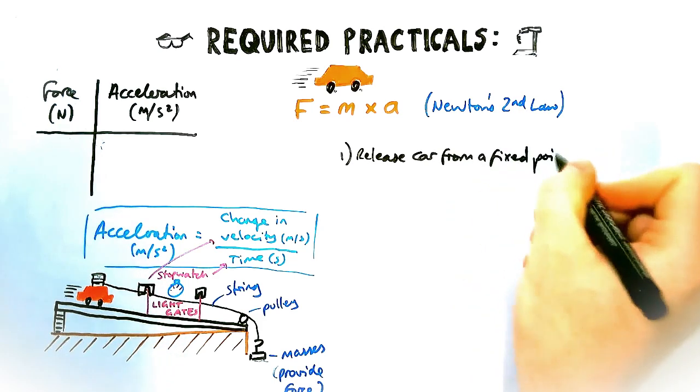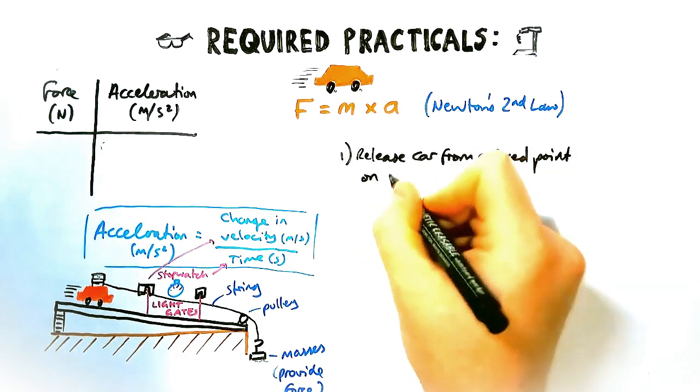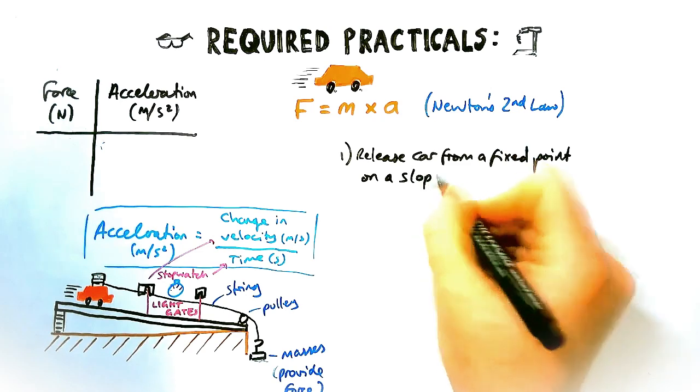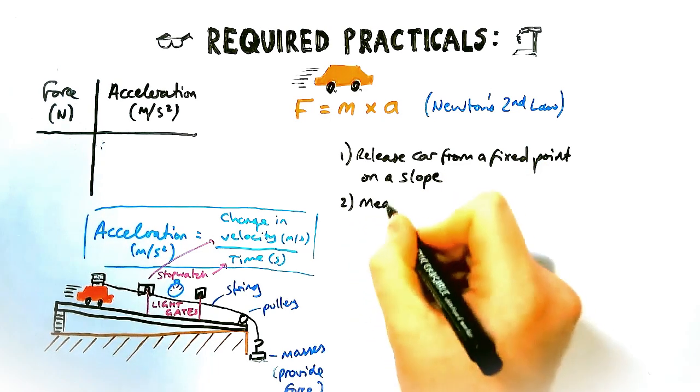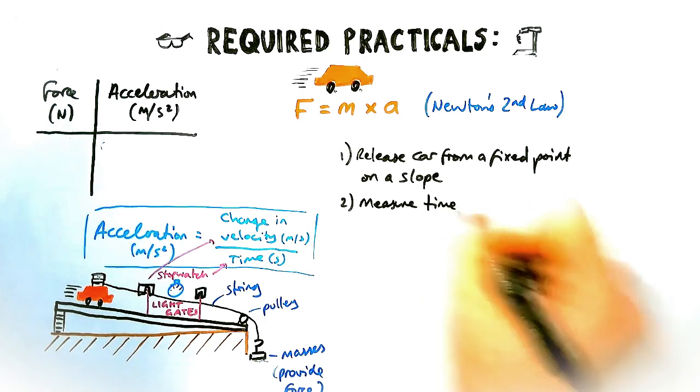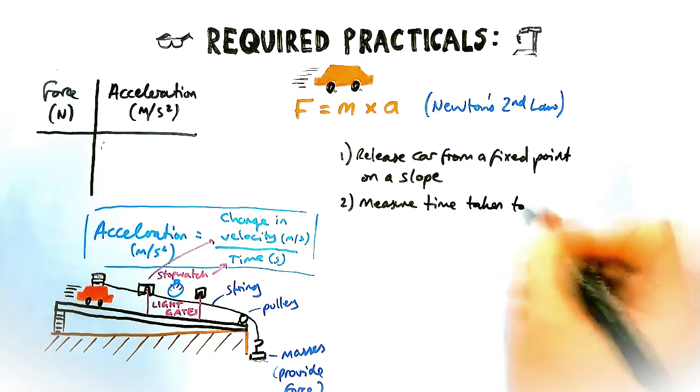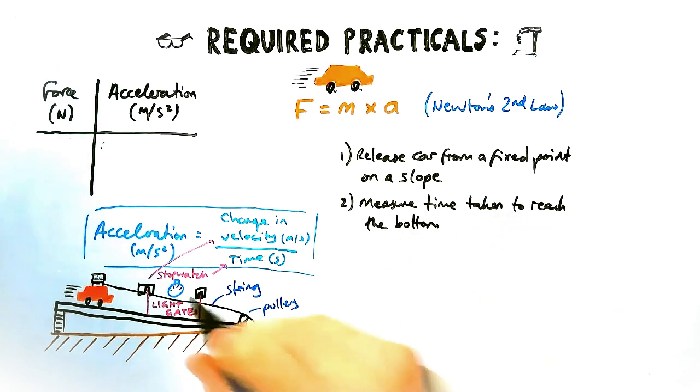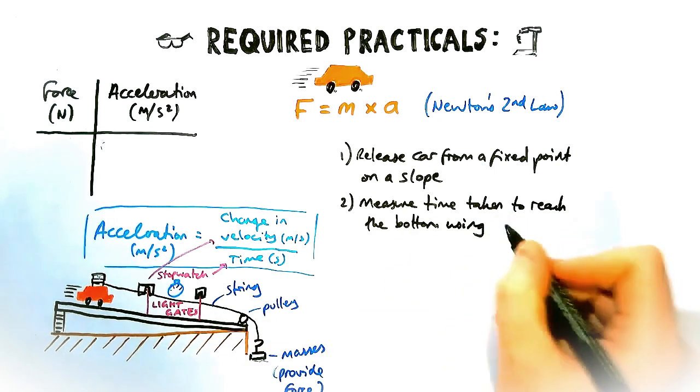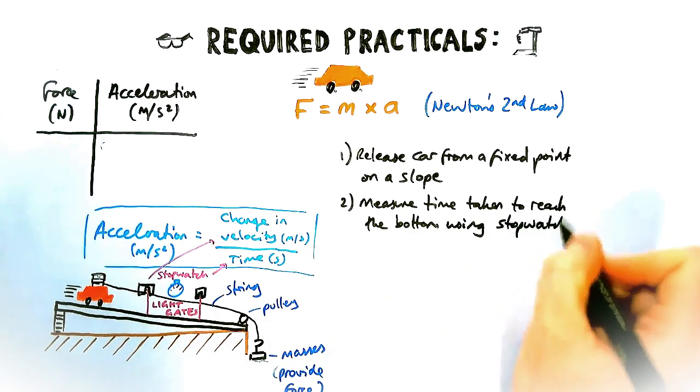So how would a method look then? First things first, we've got the car up the slope. We are going to release the car from a fixed point on a slope. Part two, what we're going to measure. We're going to measure the time taken to reach the bottom using a stopwatch.